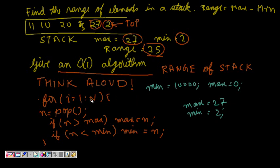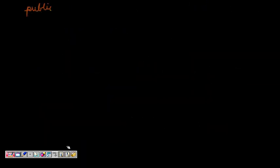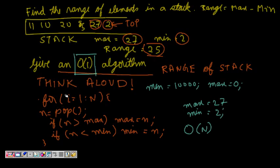The order of this algorithm is O(n) because we are traversing the whole stack. But the problem asks for an O(1) algorithm, so we need to have the stack directly give us the range — the difference between max and min — in constant time.